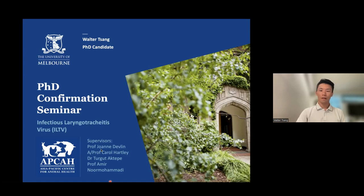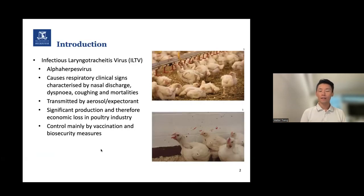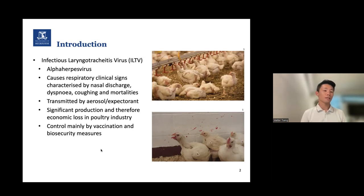I want to start with a brief introduction on ILTV. It's a species of alpha herpesvirus, which is a subfamily under the family of herpesviruses. It causes respiratory clinical signs characterized by nasal discharges — sometimes hemorrhagic — dyspnea, which is difficulty breathing, coughing, and mortalities. The virus is transmitted by aerosol or expectorant, and it causes significant production and therefore economic loss in the poultry industry. Control of ILTV is mainly by vaccination and biosecurity measures.